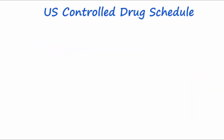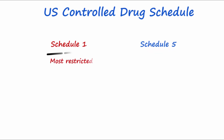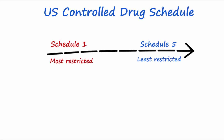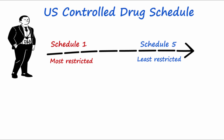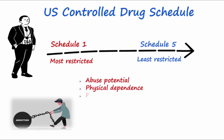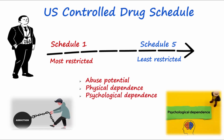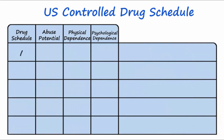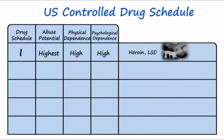Drugs with higher abuse potential are classified into five different controlled substance categories called schedules, with Schedule 1 being the most restricted to Schedule 5 being the least restricted. The schedules are enforced by the Drug Enforcement Administration, or DEA, and are based on their abuse potential and capacity to lead to physical and psychological dependence. Schedule 1 drugs have the highest abuse potential and are not prescribed because they have been defined as having no clinical use. Examples of Schedule 1 drugs are heroin and LSD.